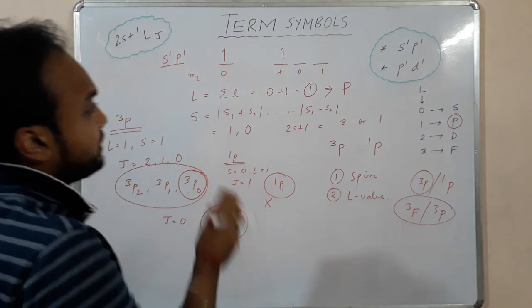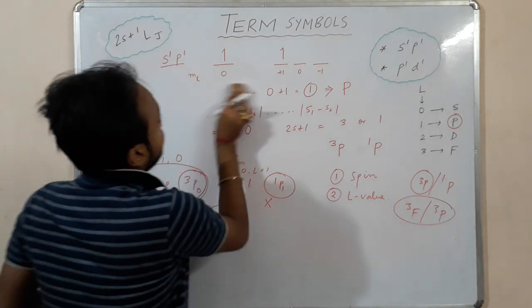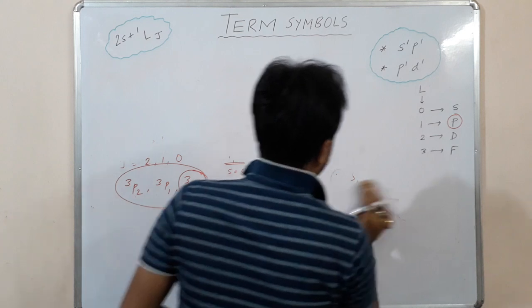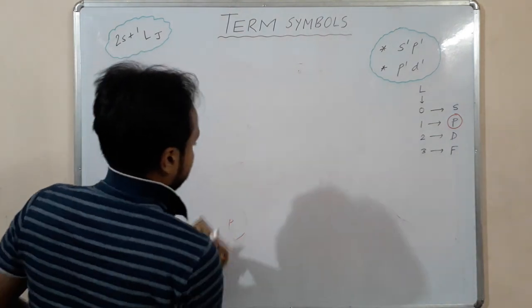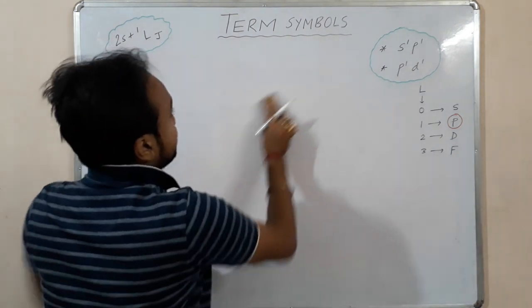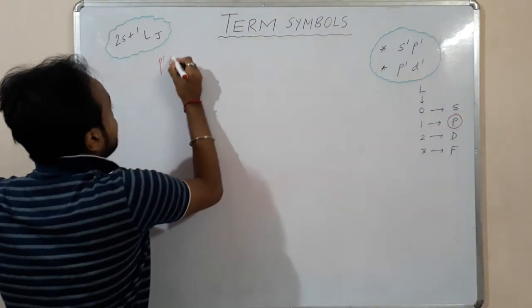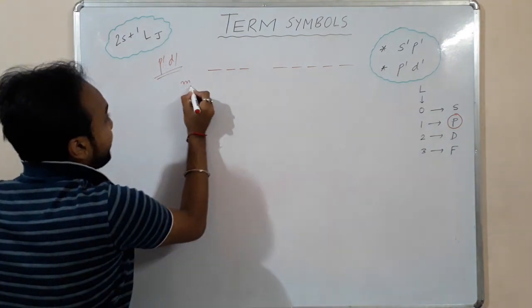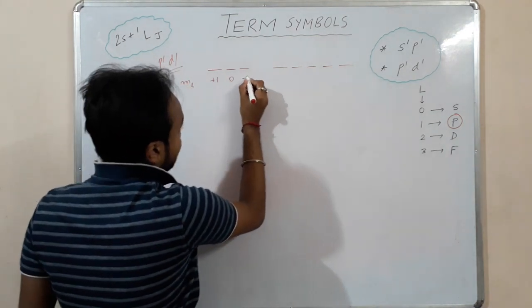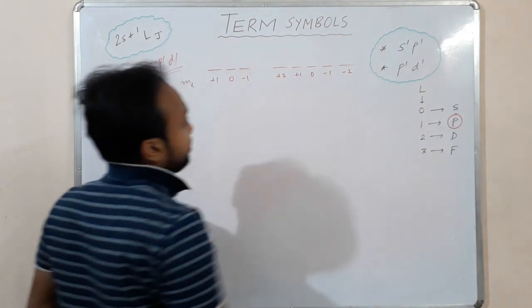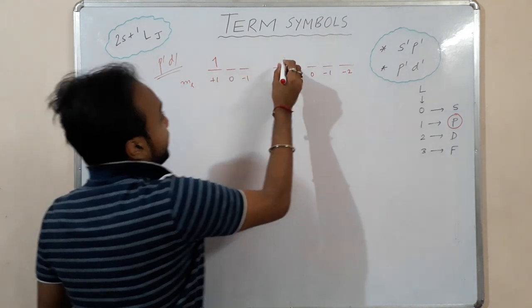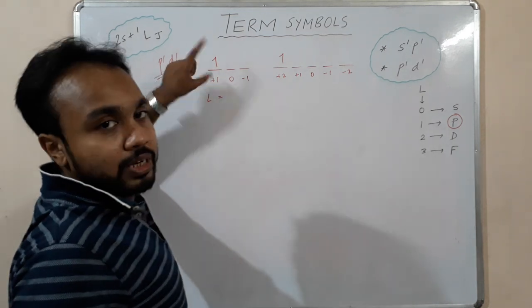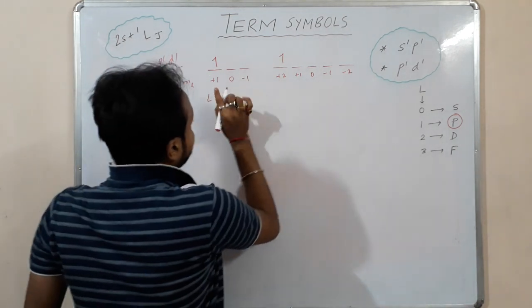Now let's discuss the p¹d¹ system. For p¹d¹, the mₗ values are +1, 0, −1 for p and +2, +1, 0, −1, −2 for d. The total L value is l_p + l_d = 1 + 2 = 3, which corresponds to an F term.